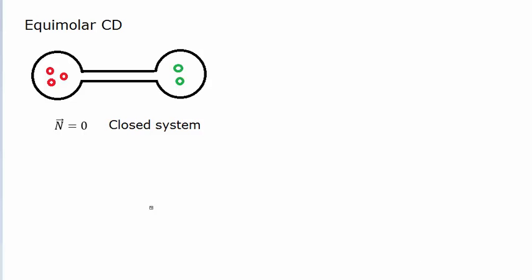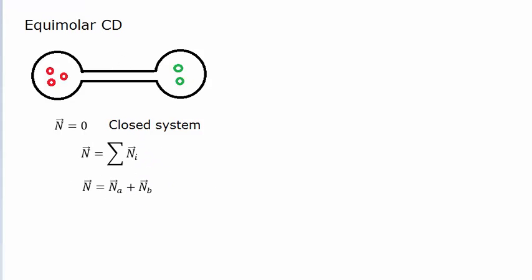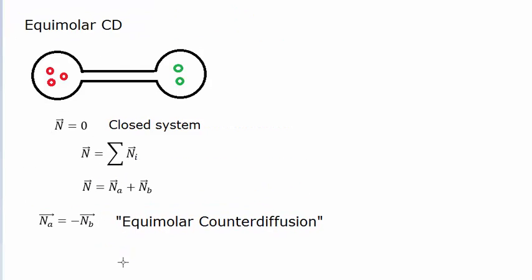The total flux is going to be the sum of the individual fluxes in the system. In this case, we have two species within this glass apparatus, so that's the flux of A plus the flux of B. Because N equals zero, what we're really seeing is that the flux of A is going to be the opposite of the flux of B.